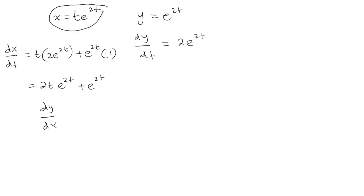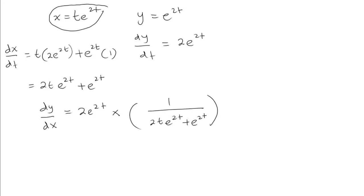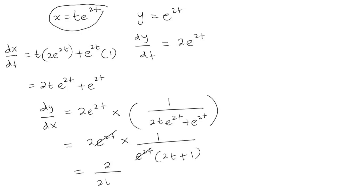To find dy/dx, we multiply dy/dt by dt/dx. So dt/dx equals 1 over 2t·e^(2t) plus e^(2t). We can factor out e^(2t) from the denominator to get 2t plus 1. Canceling the common e^(2t) terms, we get dy/dx equals 2 over 2t plus 1.